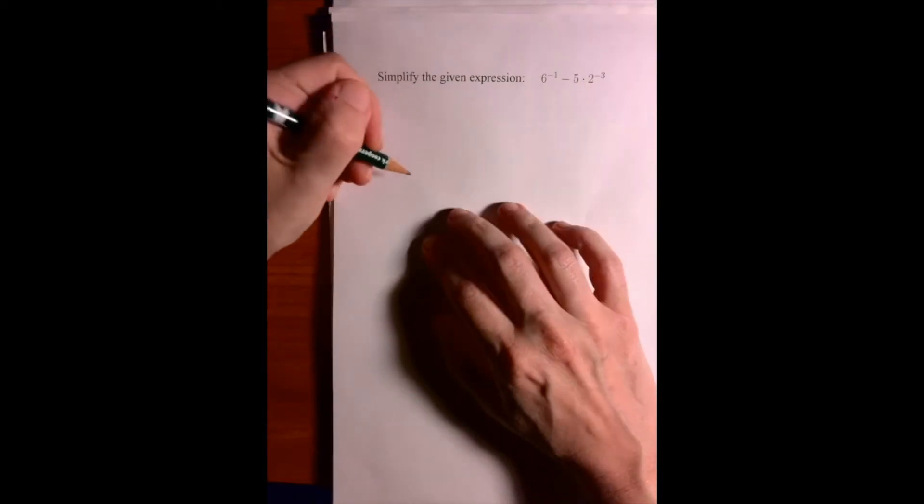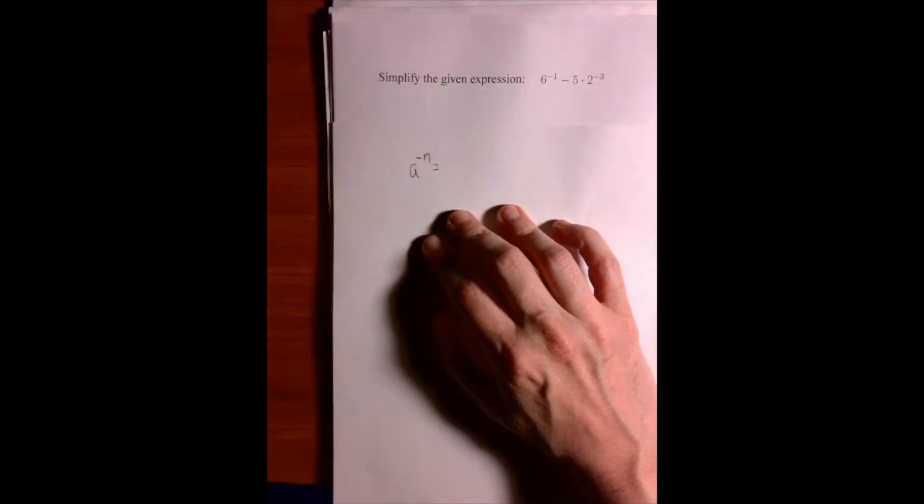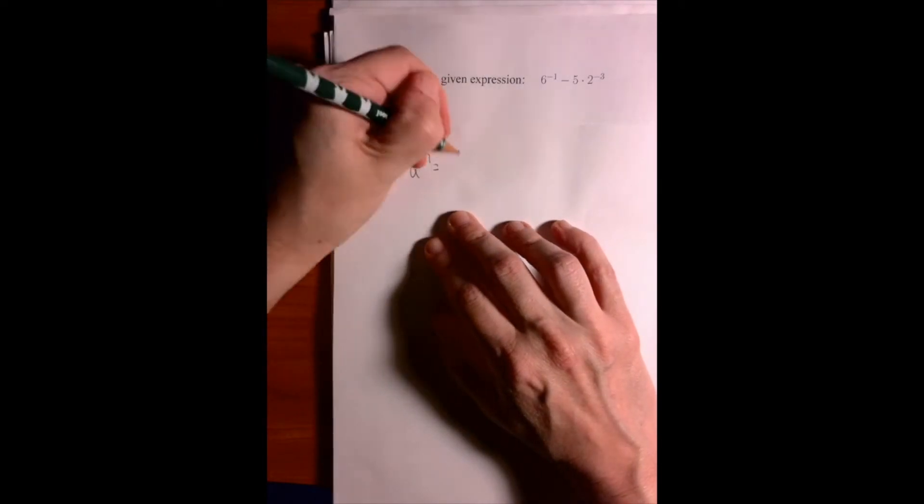So we have this expression to simplify. Recall that our rule of negative exponents is that a to the negative n is the same as 1 over a to the n.